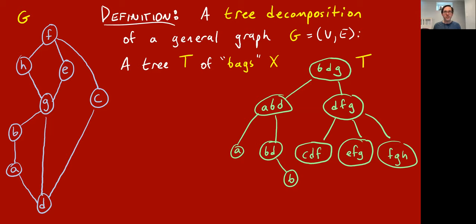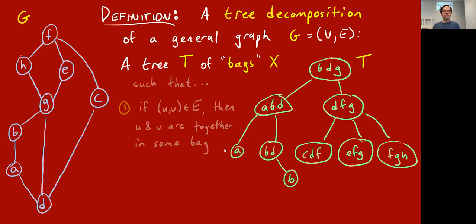The vertices are circles — they're bags — because they have letters in them, and those letters are names of vertices from G. There are two rules for this tree decomposition T. First, for every edge in the original graph, like an edge between E and G, then E and G have to appear together in at least one bag.